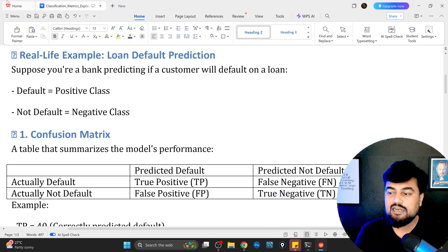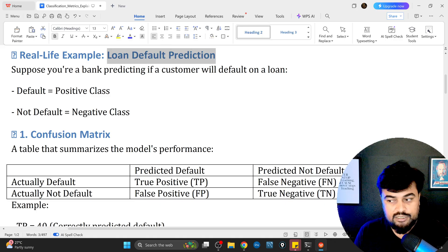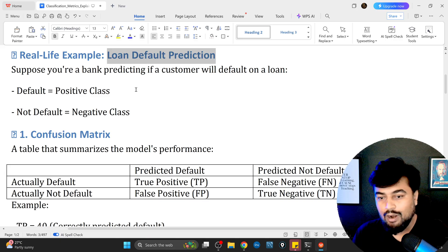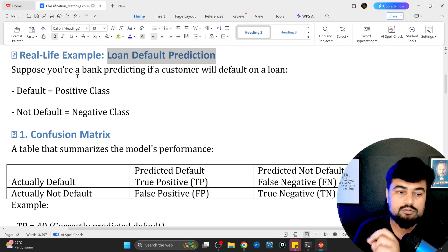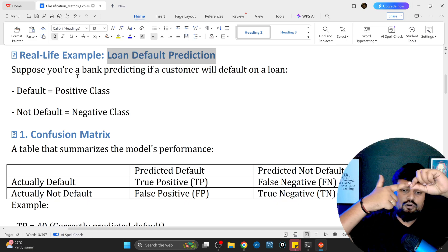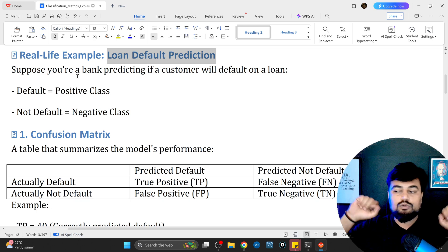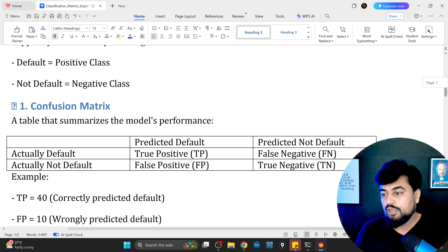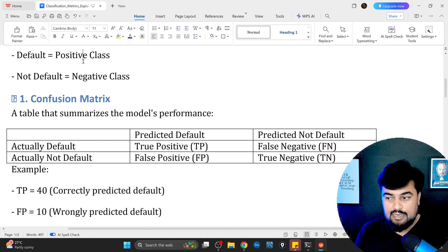Let's start with a real life example: loan default prediction. How many customers will default the loan? Now in all these metrics, the base metric is the confusion matrix. What is a confusion matrix? You need to understand that truly. Let's talk about two basic terms in confusion matrix: one is default, second is non-default.